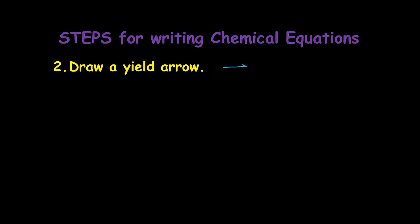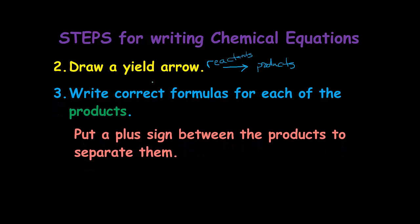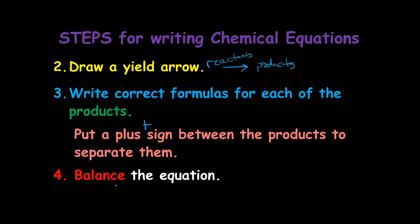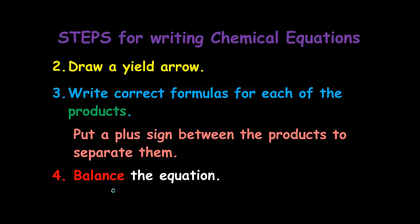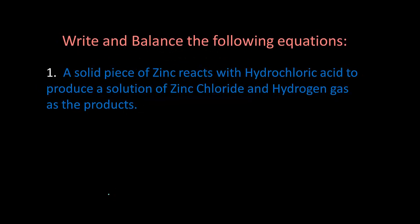Second step is you draw a yield arrow — that is just an arrow pointing to the right. Third step is you write the correct formulas for each of the products, and remember you put a plus sign between the products to separate them. Step 4: you need to balance the equation.